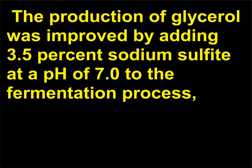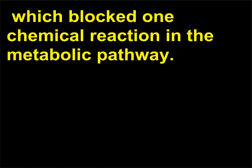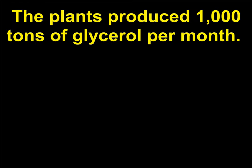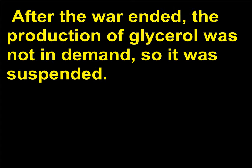The production of glycerol was improved by adding 3.5% sodium sulfite at a pH of 7.0 to the fermentation process, which blocked one chemical reaction in the metabolic pathway. Neuburg's procedure was implemented with the conversion of German beer breweries to glycerol plants. The plants produced 1,000 tons of glycerol per month. After the war ended, the production of glycerol was not in demand, so it was suspended.